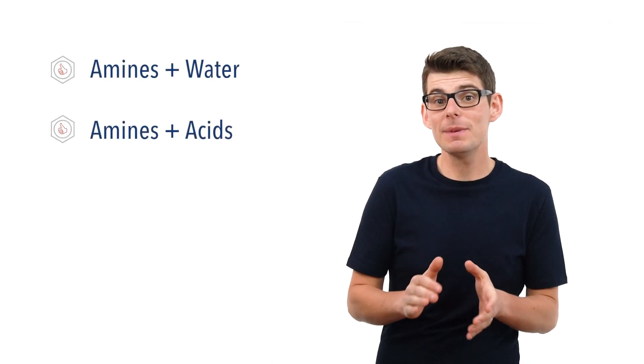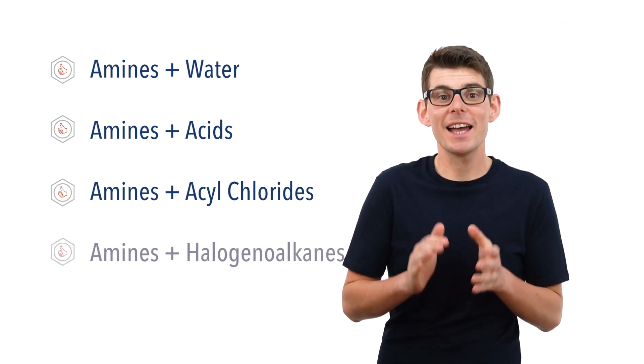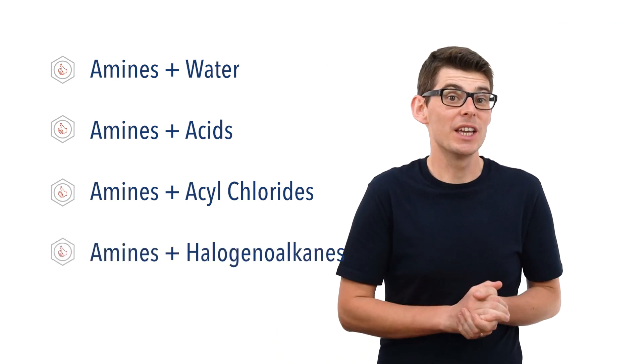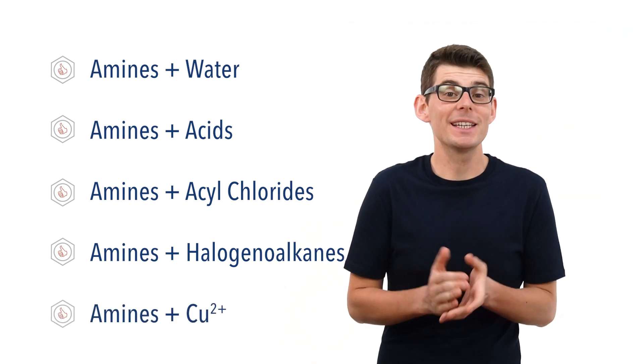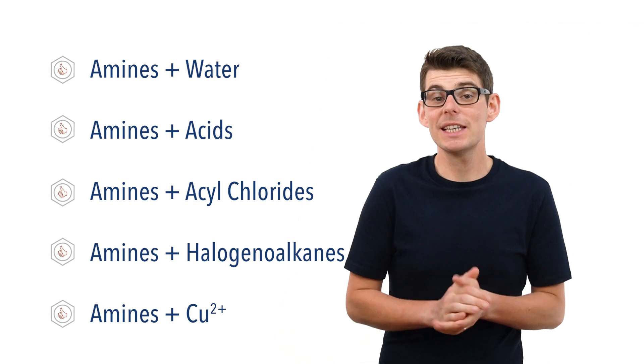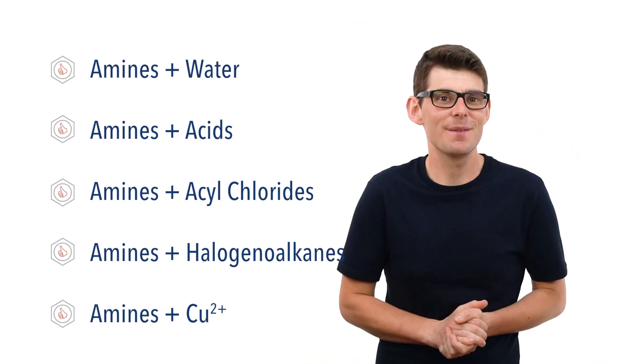Hello, Matt here from chemistrystudent.com. In this video we're going to look at some reactions of amines using butyl amine as an example. We're going to talk about the reactions between amines and water, amines and acids, amines and acyl chlorides, amines and halogen alkanes, and amines and metal aqua ions, specifically copper 2 plus ions. Amine basicity and formation have been covered in separate videos — check the links in the description below.